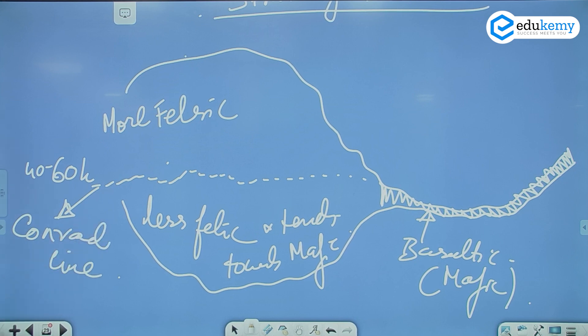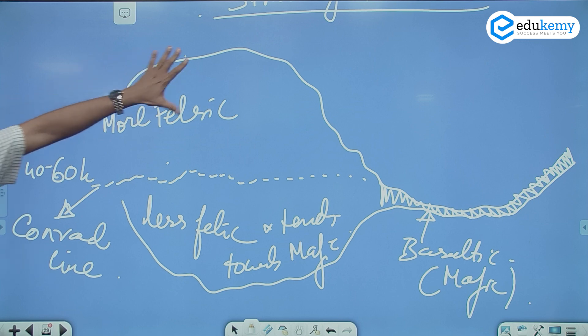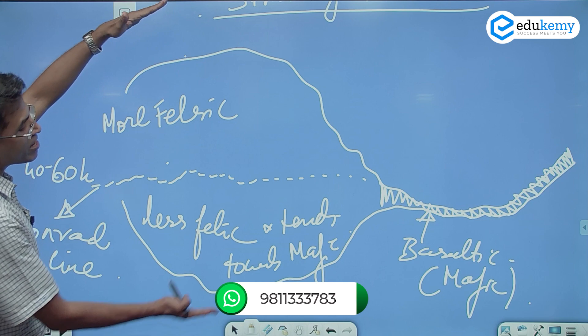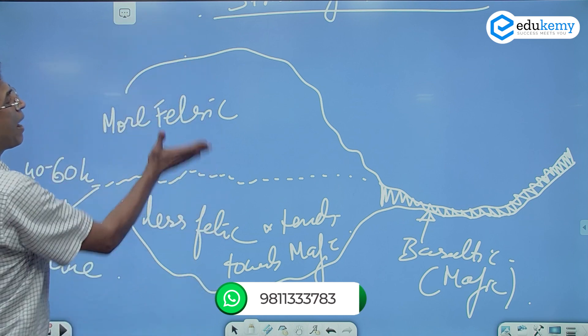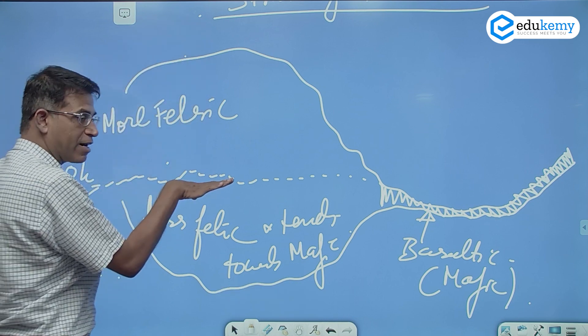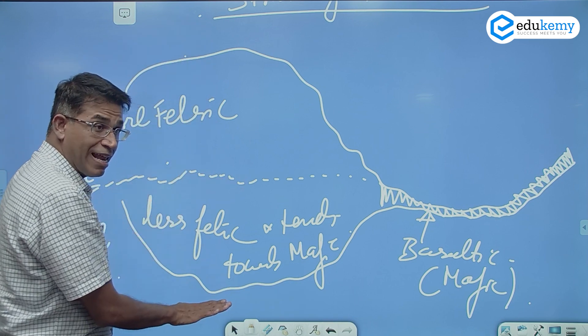The upper part of the continents are lighter, acidic, light in color. They are more granitic. They are more quartz. This is more felsic. See by nature, continents are entirely felsic. But the difference of properties. The upper part is more felsic. The lower part is relatively less felsic.